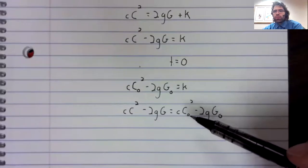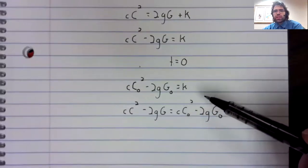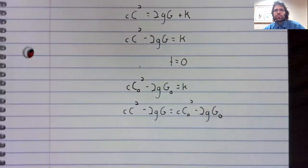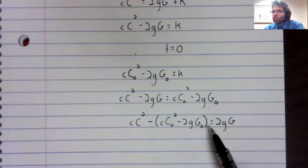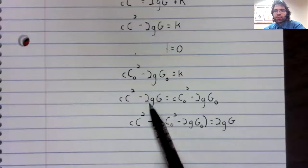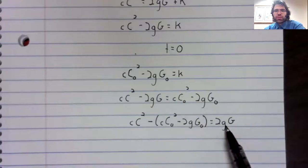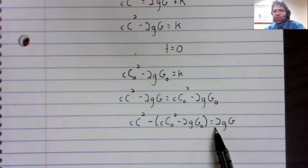We'll solve for capital G. We'll start by getting these over on the left and moving this over here. And now we'll divide both sides by this constant.